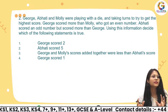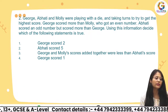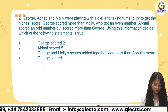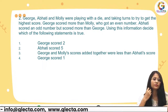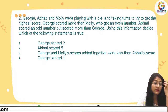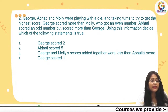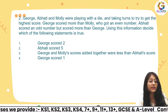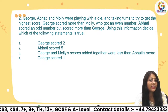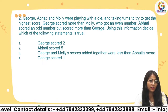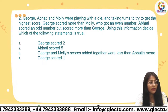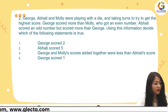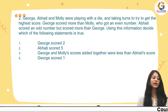Moving on to question number two. George, Abati, and Molly were playing with a die, taking turns to try to get the highest score. George scored more than Molly, who got an even number. Abati scored an odd number but scored more than George. Using this information, decide which statement is true.